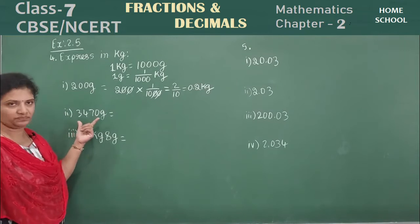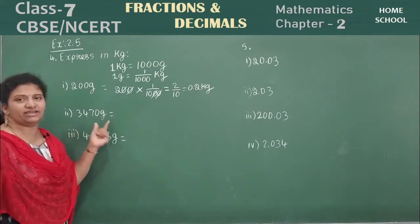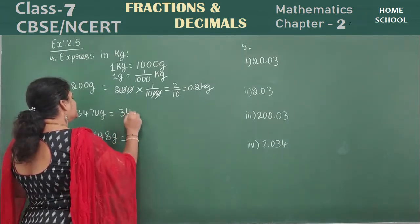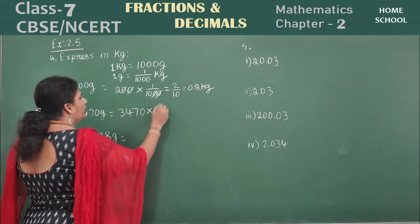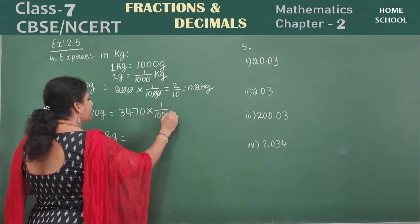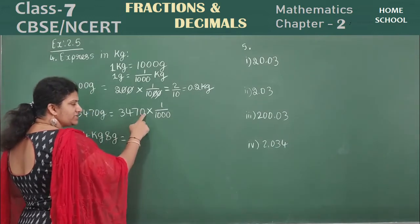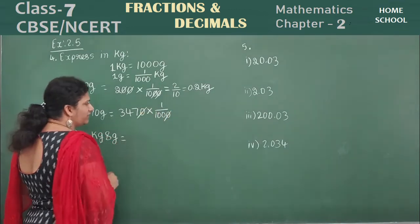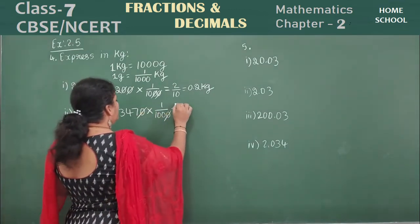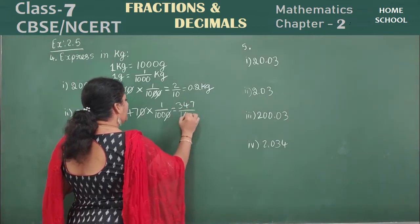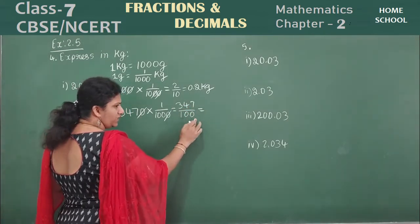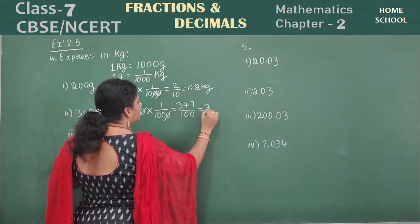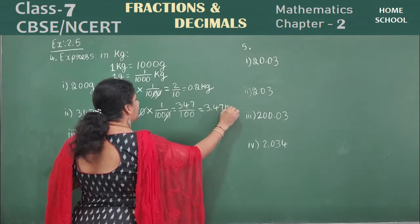So 200 grams is nothing but 0.2 kg. So next, 3470 grams. How can you convert here? 3470 into one by thousand. In numerator zero, denominator zero, if you have you can cancel children. So one zero, one zero will be canceled. You are left with 347 by 100. 100 means what? Two zeros.